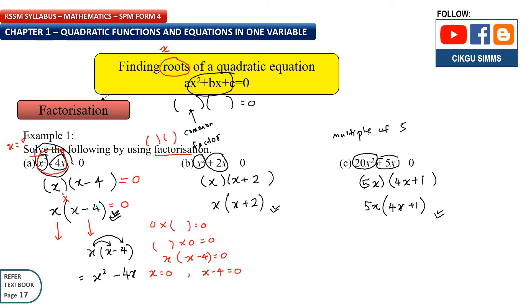The first part equals 0, so x equals 0. The second part: x minus 4 equals 0, so we bring minus 4 to the other side and it becomes positive 4. So we have two answers — two roots. The first root is 0 and the second root is 4. This is the answer for question A.